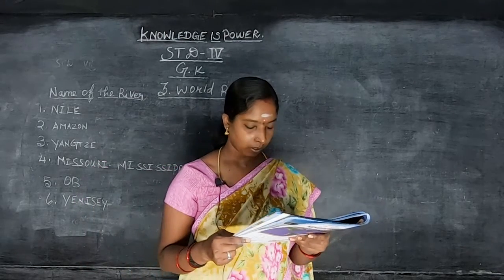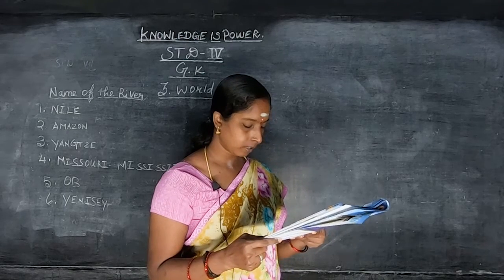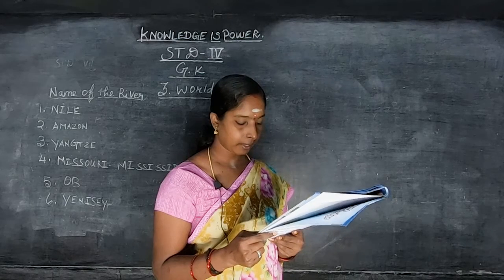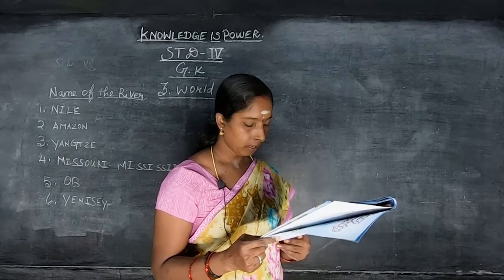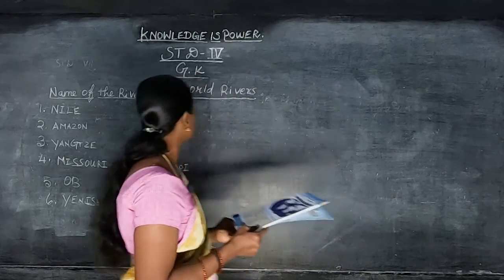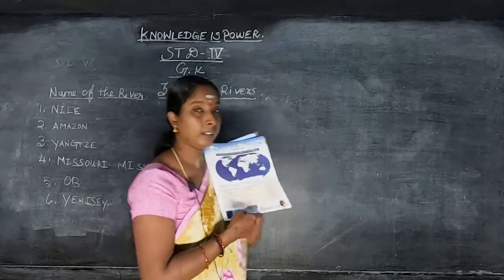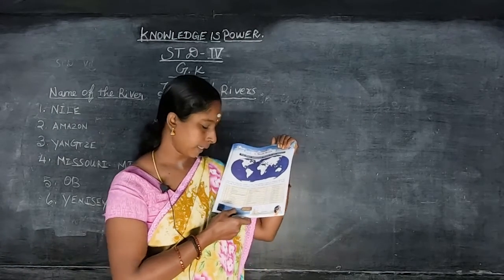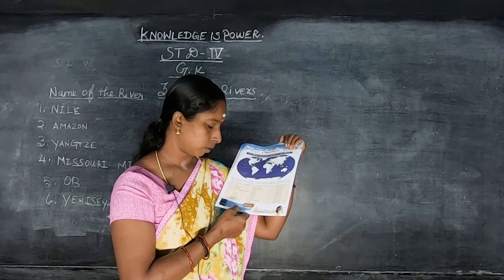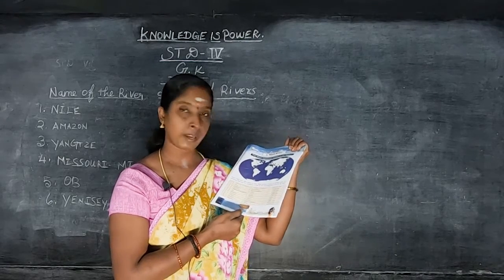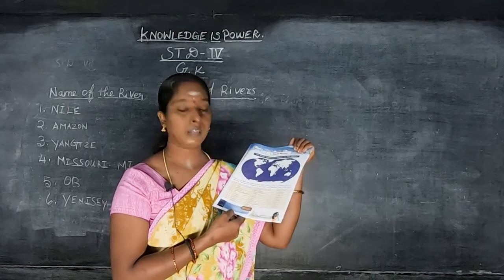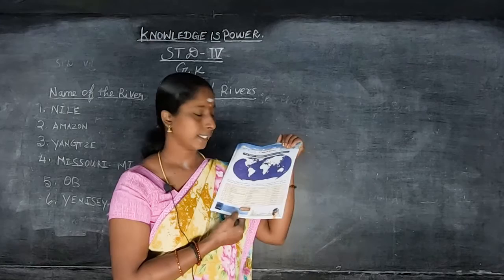Do you know? The wettest place in the world is Tutendo in Colombia. Annual rainfall: 1,170 centimeters.